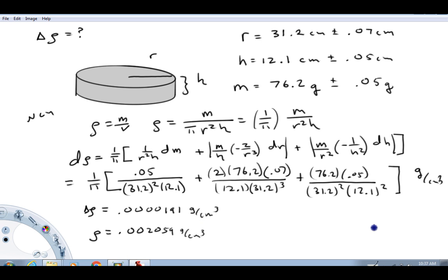All right folks, I'm back here and did a lot of number crunching, and hopefully these worked out okay. But what I got for this value here is 0.0000191 gram per cubic centimeter. I also went ahead and calculated the density. I probably should have mentioned that earlier. And all I did is I just put our value 76.2 here, pi, 31.2 here, squared, 12.1, calculated value for that. And what I got for the density is 0.002059 and a couple more decimals. So here's my calculated density. Here's the uncertainty in my density.